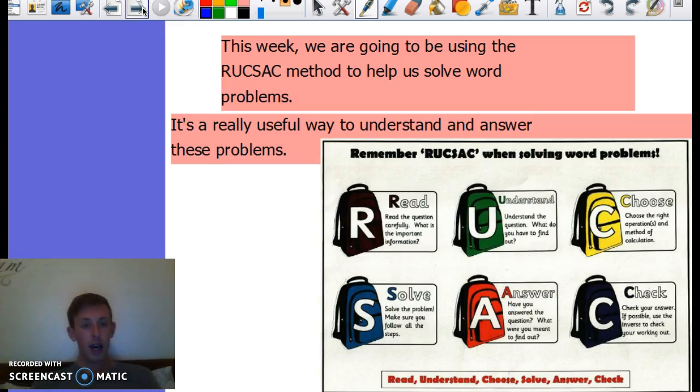Let's have a reminder of what RUCSAC means. R stands for read, U stands for understand, but we actually said underline key information to help you find it later in the problem. C stands for choose the operation you want to use, S is when you solve it, A is when you show your answer, and then finally you check your answer using your calculator or by doing the inverse operation.